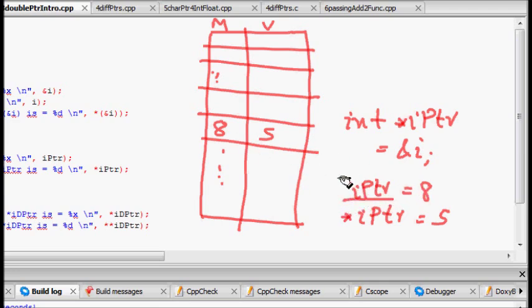But when I define one variable iptr, int star iptr, this means it is having a value of the memory location, it must also be residing somewhere. So let's say it is residing at memory location 12. And it has the value now what? 8. So this is iptr.